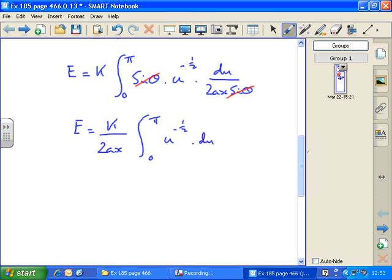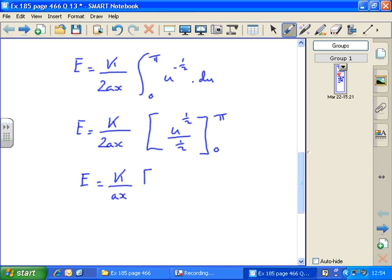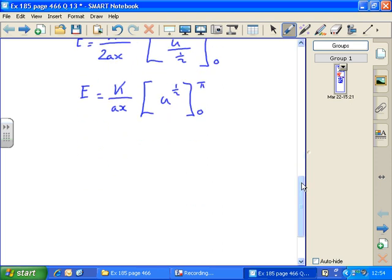Which is a standard integral. We'll add 1 to the power, divide by the new power. We get e equals k over 2ax, u to the half over a half between 0 and pi. The 2 can come outside, which cancels the 2 underneath. So e equals k over ax, u to the half between 0 and pi.